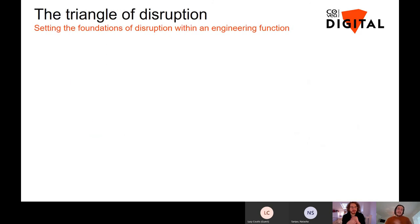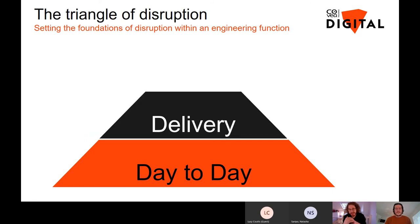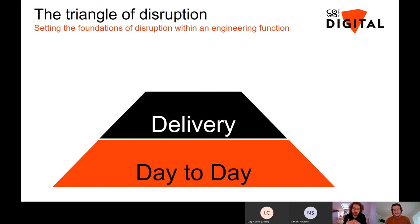It's important for Josh to reiterate the foundations of disruption from an engineering function. The triangle of disruption looks like this: on the bottom layer we have the day-to-day BAU stuff — as a company we need to sell and maintain policies with our affinity partners. The second tier is about delivery of new products, including our insurance-as-a-service platform. And then the top tier is the disruptive projects and technologies, enabling a team inside Covair to take the initiative and run with disruptive projects that we can then spread to the wider organisation.